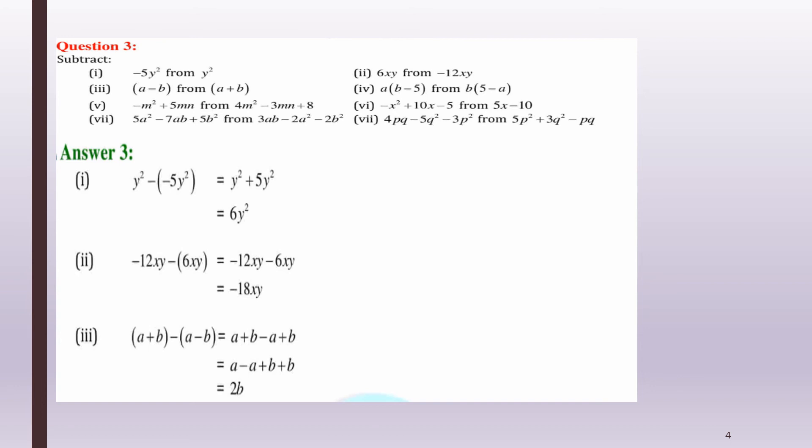Part 3: (a + b) minus (a - b). When the minus multiplies through the bracket, minus into minus becomes plus. So a and -a cancel, and b + b = 2b is the answer.